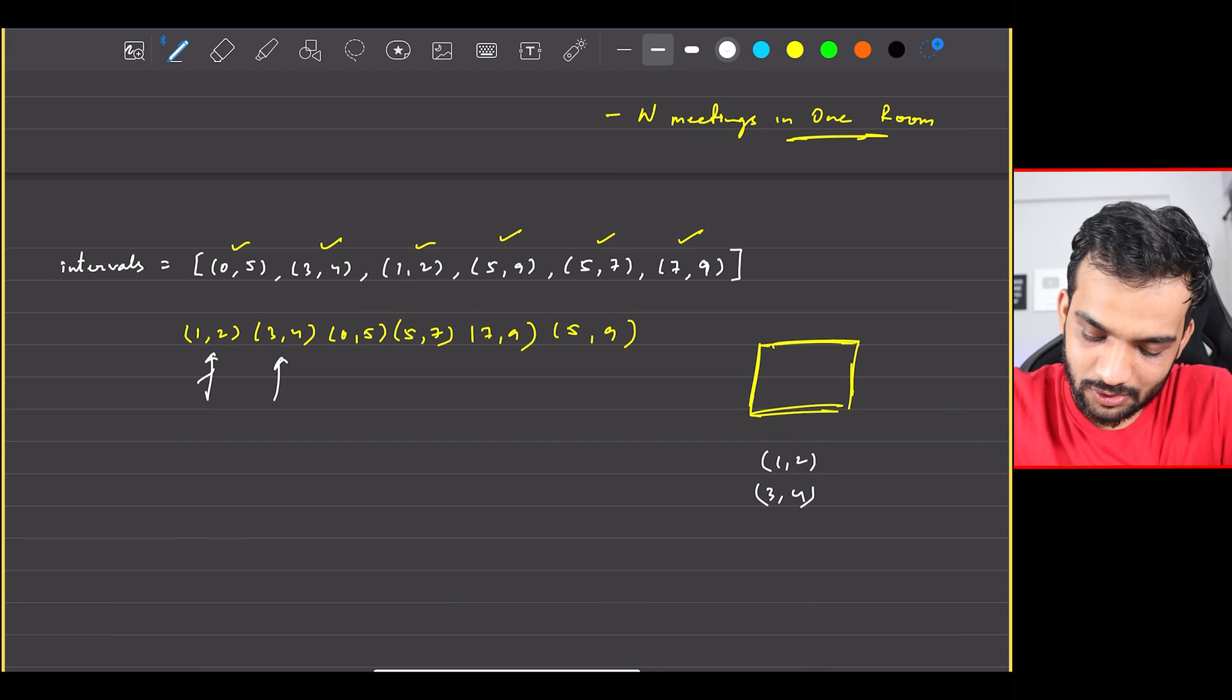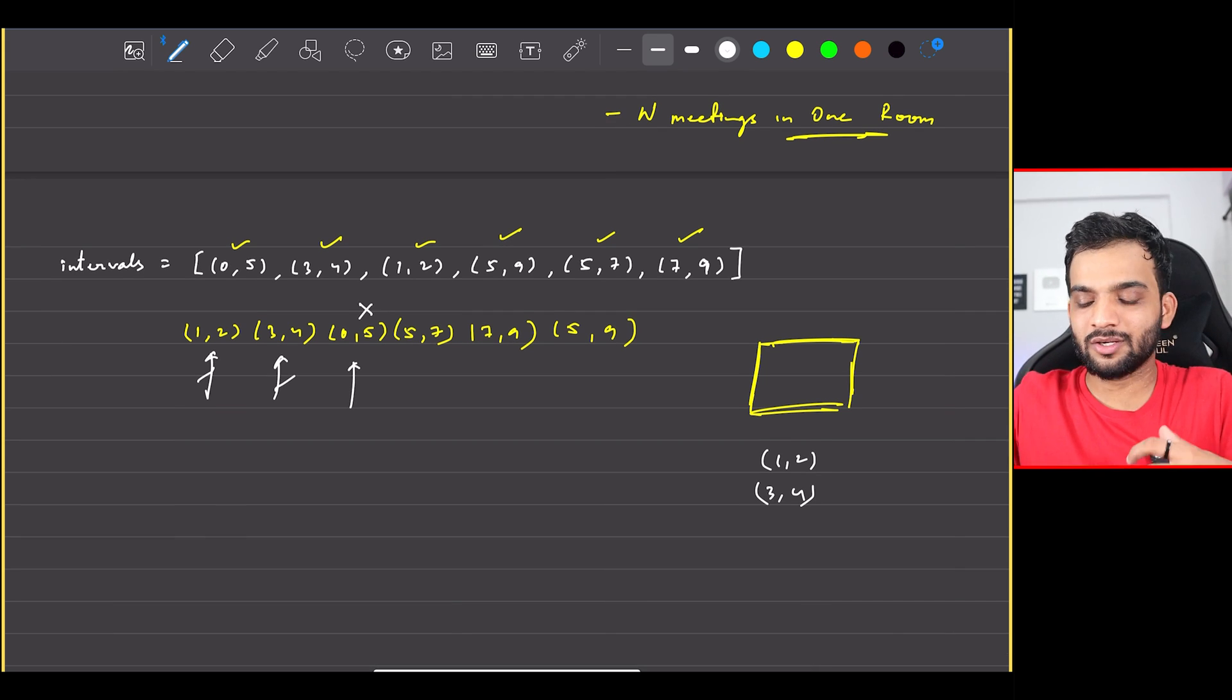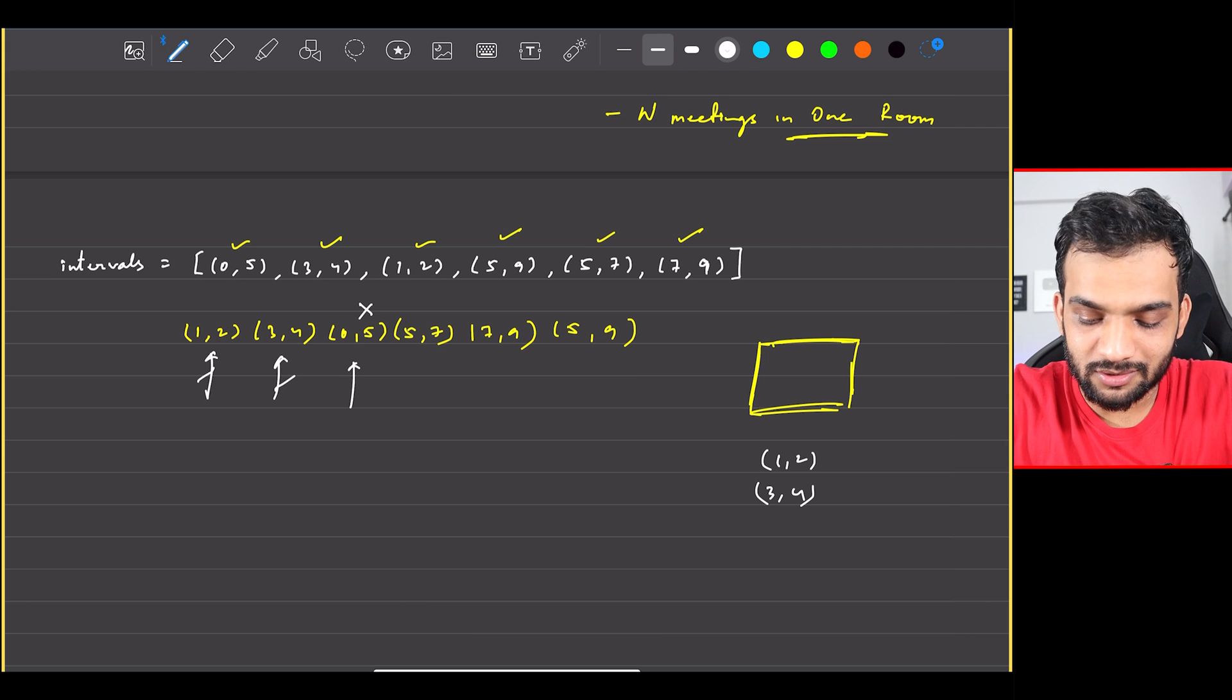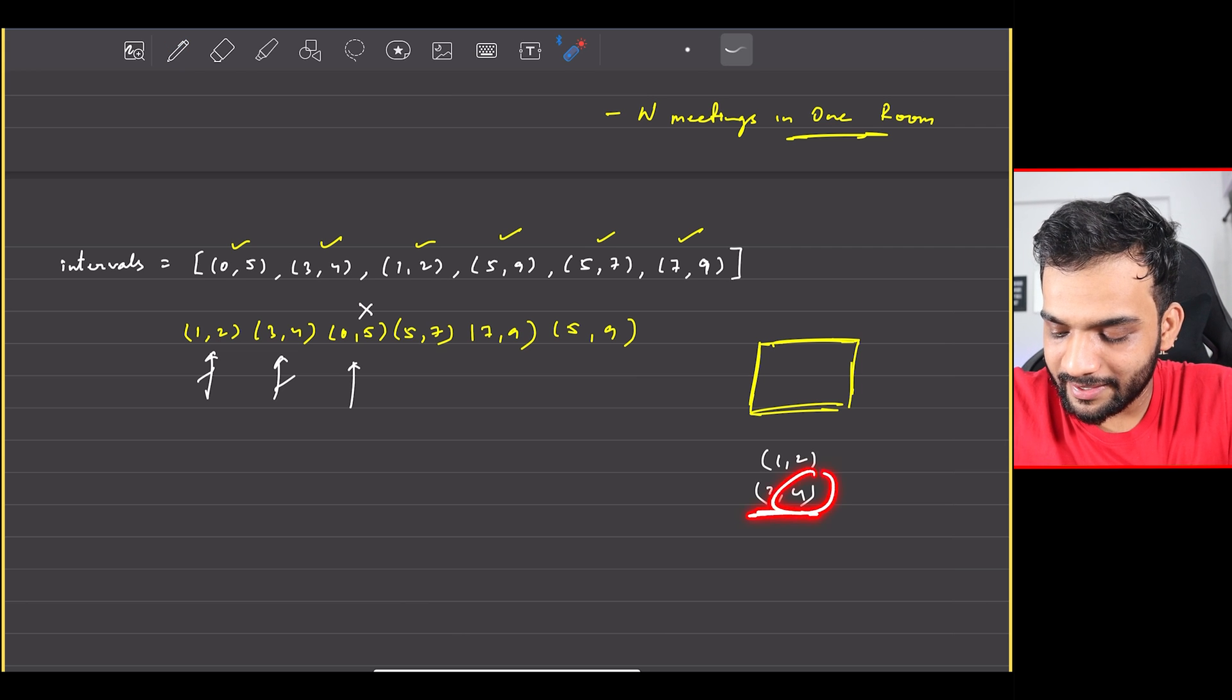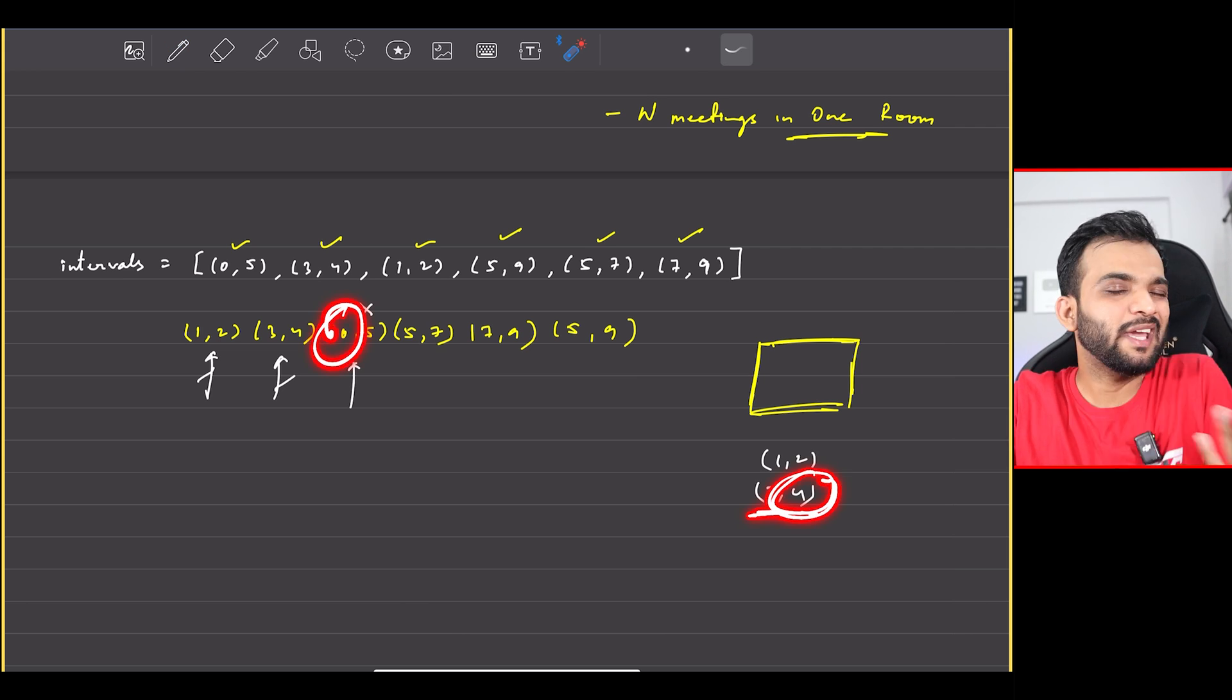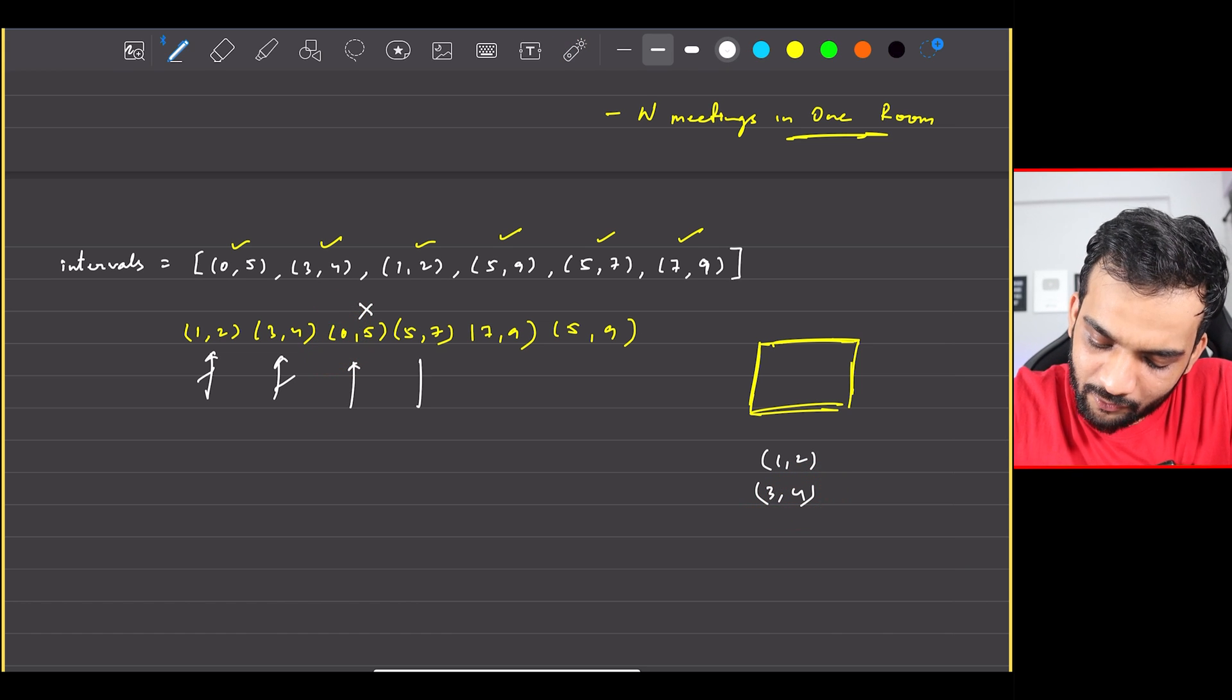Can I perform (0,5)? No, I cannot, because I just cannot - because the last meeting will end at 4 and this is starting at 0, so I cannot. I just cannot. Perfect.